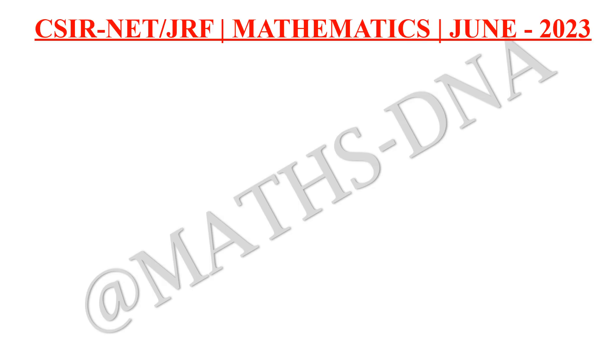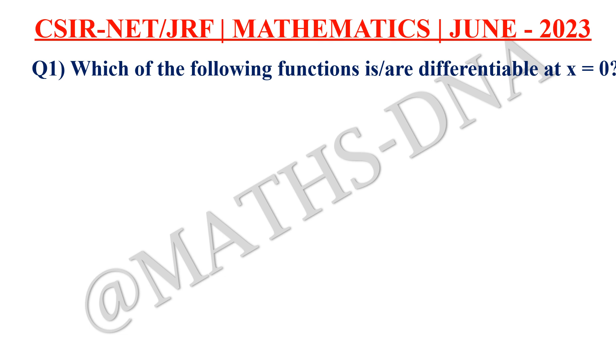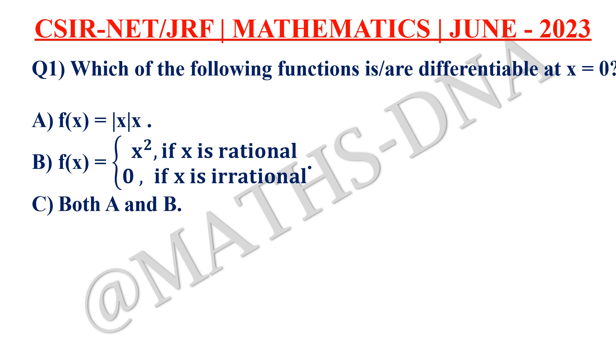Moving on to the question. The question is, which of the following functions is or are differentiable at x equals 0. And the options are: a) f(x) equals mod x into x; b) f(x) equals x square if x is rational and 0 if x is irrational; option c, both a and b; and option d, neither a nor b.